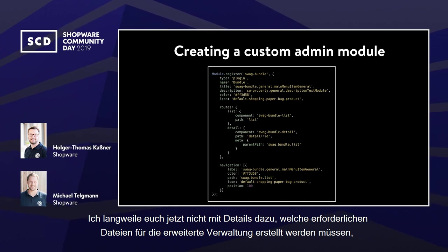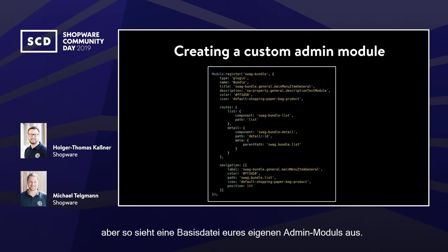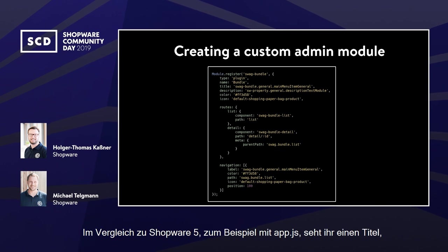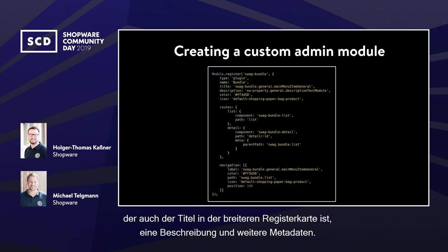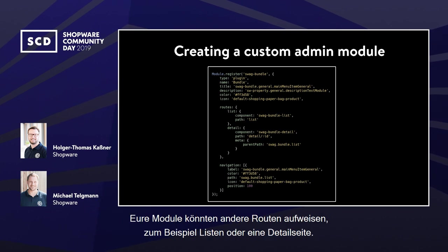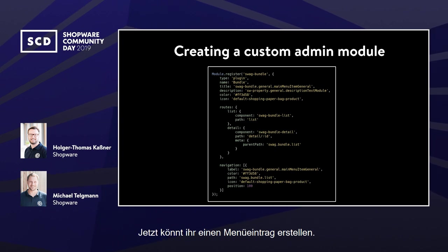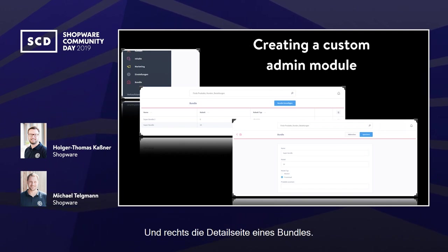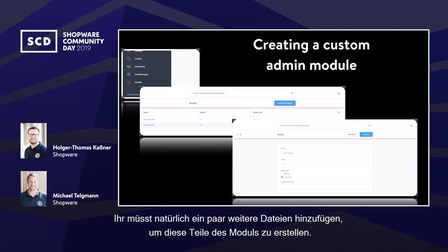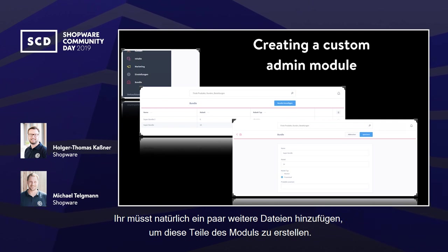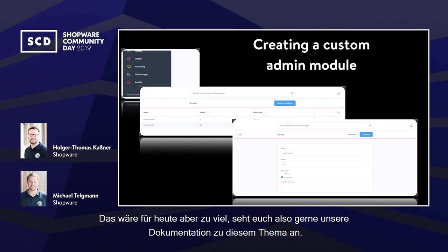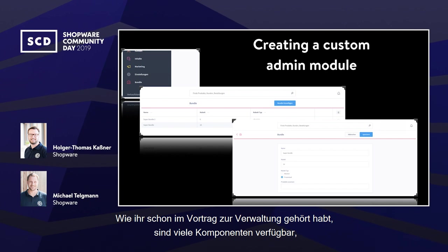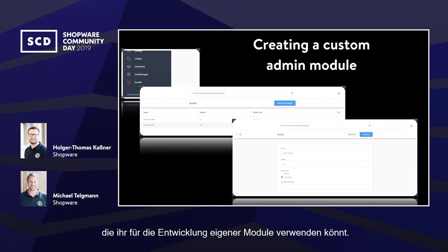Here is how a base file of your own admin module looks — comparable to app.js in Shopware 5. You define the title (also shown in the browser tab), a description, and other meta information. Your modules can have different routes, for example a listing or a detail page, and you create an entry for the menu. A complete module could have a new menu entry on the left, the listing of bundles in the middle, and the detail page on the right. There are many components available to develop your own module — feel free to explore the documentation.